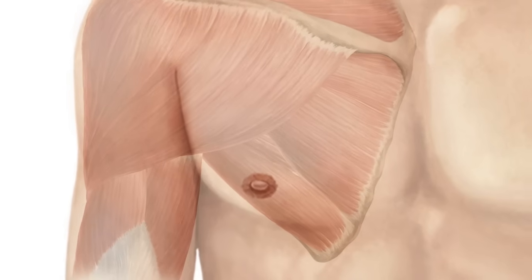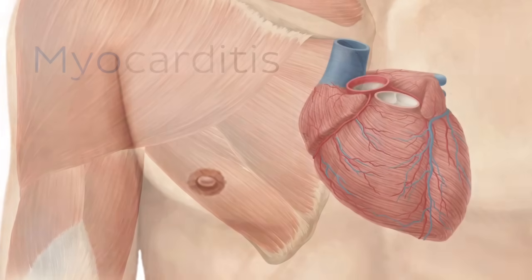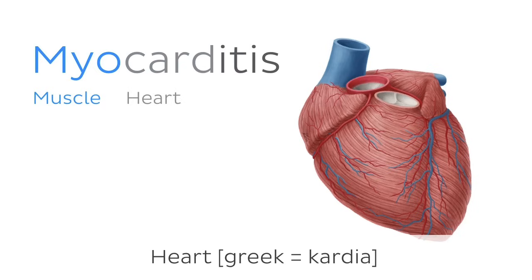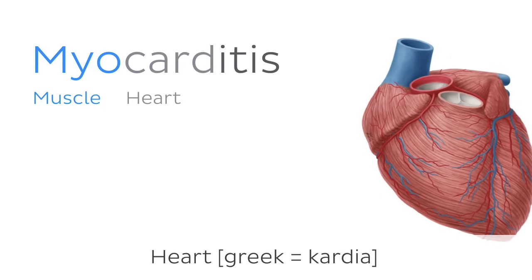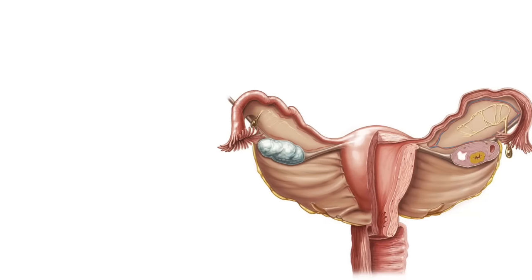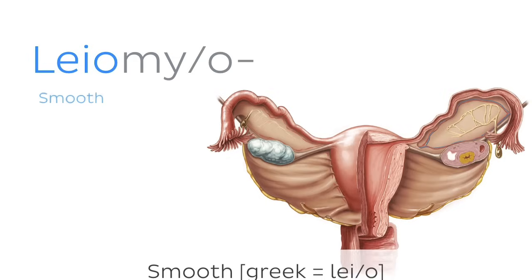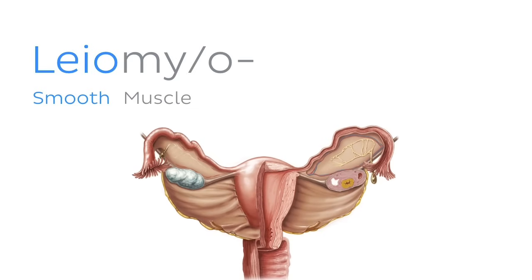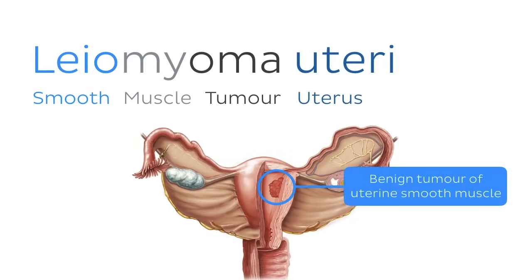Myo can also appear as a prefix, such as myocarditis — myo referring to muscle, card referring to the Greek word cardia meaning heart, and itis, which we learned before, means inflammation — so inflammation of the muscle of the heart. It also pops up in the term leomyo. Leo is the Greek term for smooth, so leomyo refers to smooth muscle, like in leiomyoma uteri, a benign tumor of uterine smooth muscle.